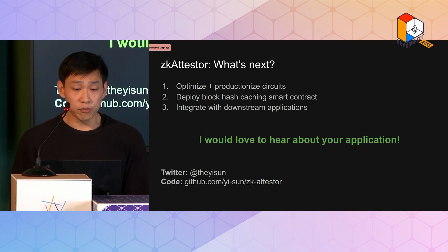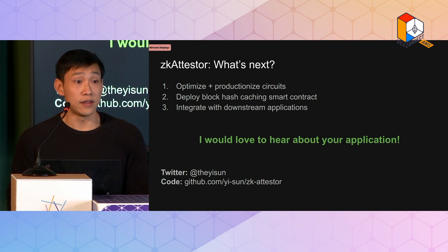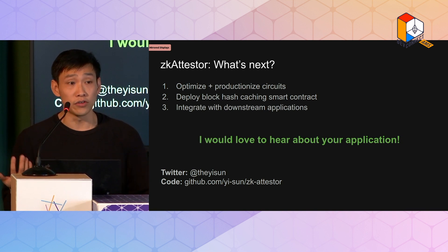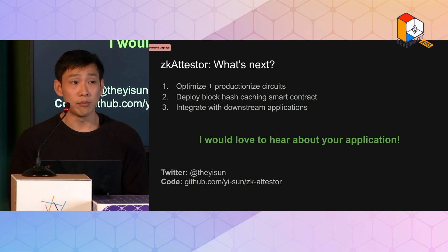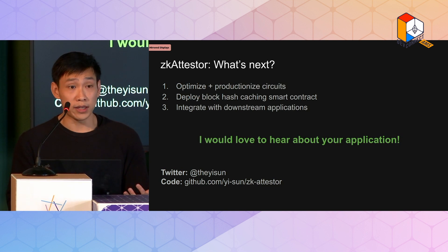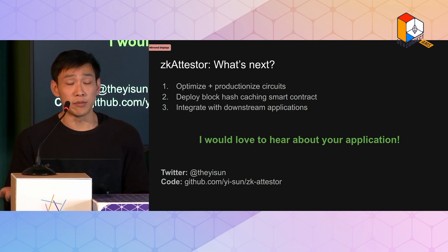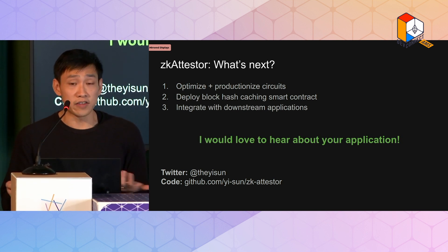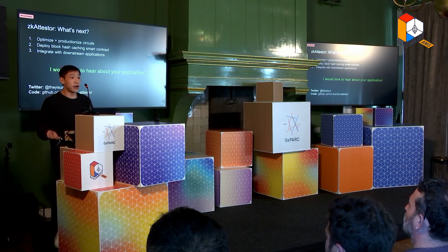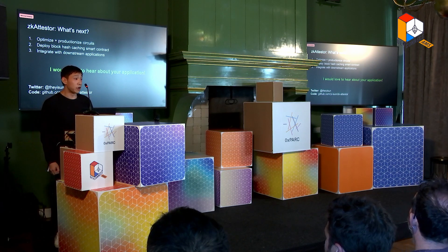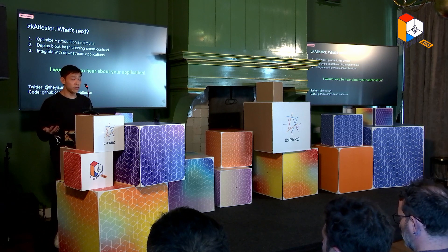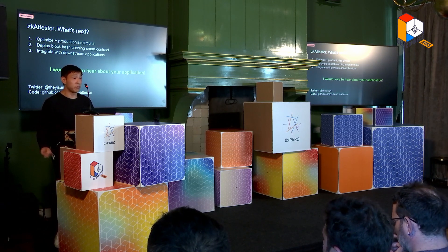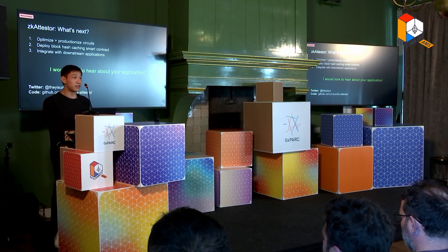The short-term roadmap for ZK Attester is: I'm looking to optimize and productionize the circuits, and then deploy the smart contract on-chain that I mentioned that will cache block hashes and make this whole system fully trustless. But most importantly, I'd like to integrate with downstream applications that want to make some of the claims I mentioned earlier in the talk. I've been coming up with various ideas for how to use this, but I'm sure that you guys have much better ideas — I'd love to hear if you have anything that could use a tool like this. You can get in contact with me on Twitter, and I just released the code on GitHub at this address.